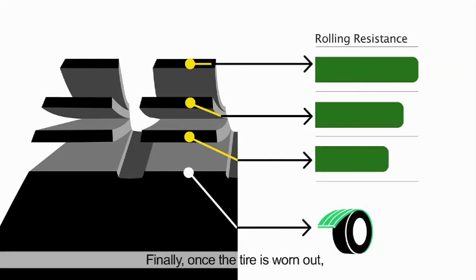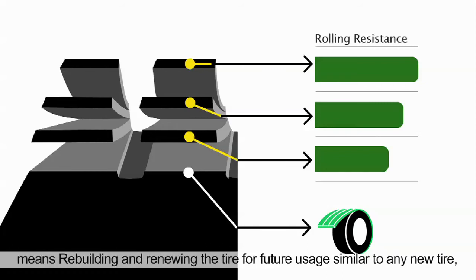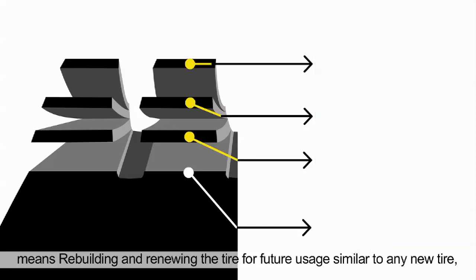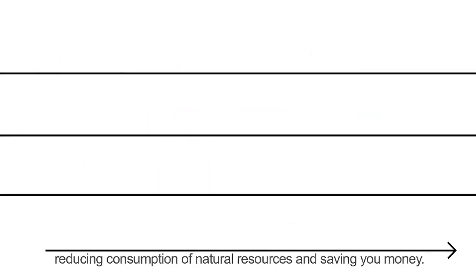Finally, once the tire is worn out, thanks to the GT Radial strong casings that allow a high level of retreading, means rebuilding and renewing the tire for future usage similar to any new tire, reducing consumption of natural resources and saving you money.